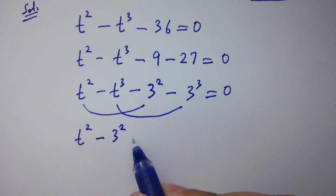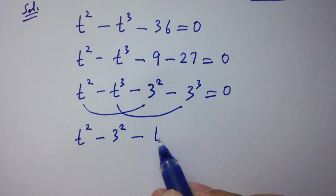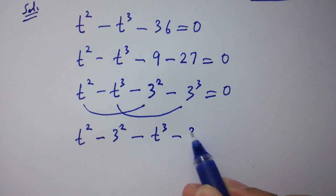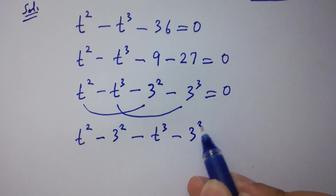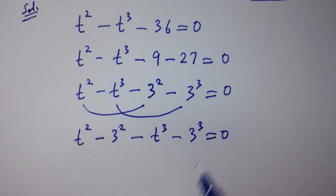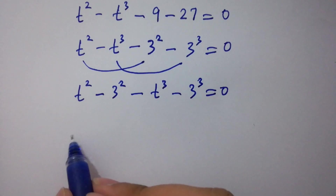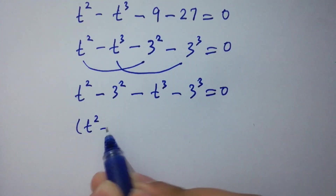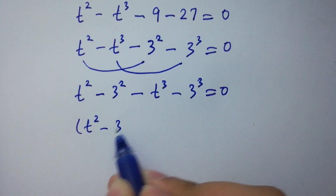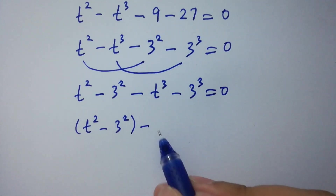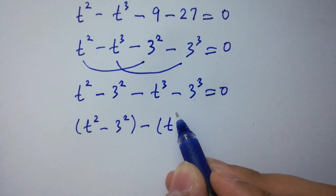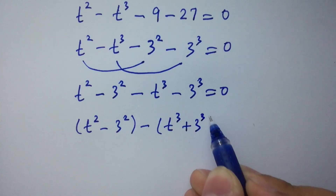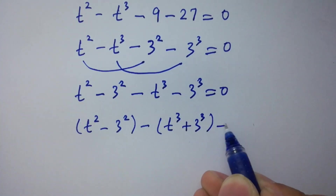We can write it as t-squared minus 3-squared minus t-cubed minus 3-cubed equal to 0. Bracket: t-squared minus 3-squared, minus common, t-cubed plus 3-cubed, equal to 0.